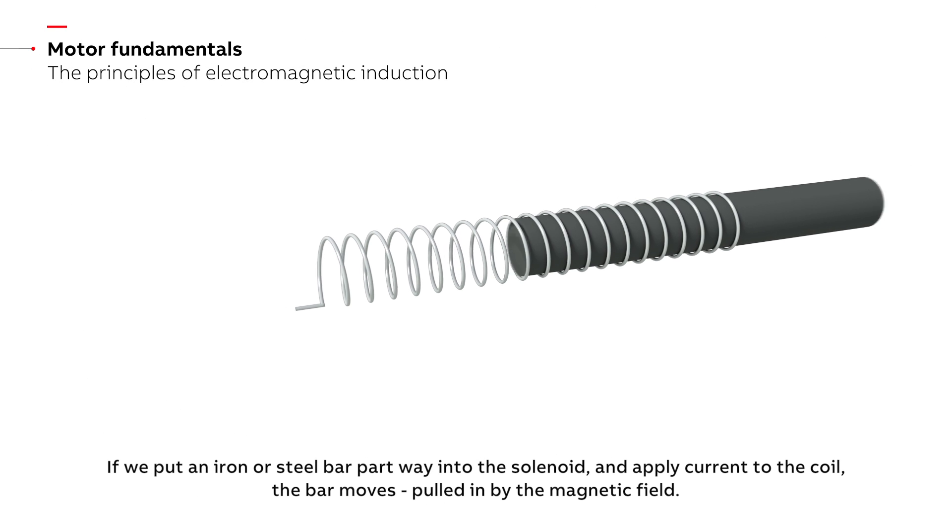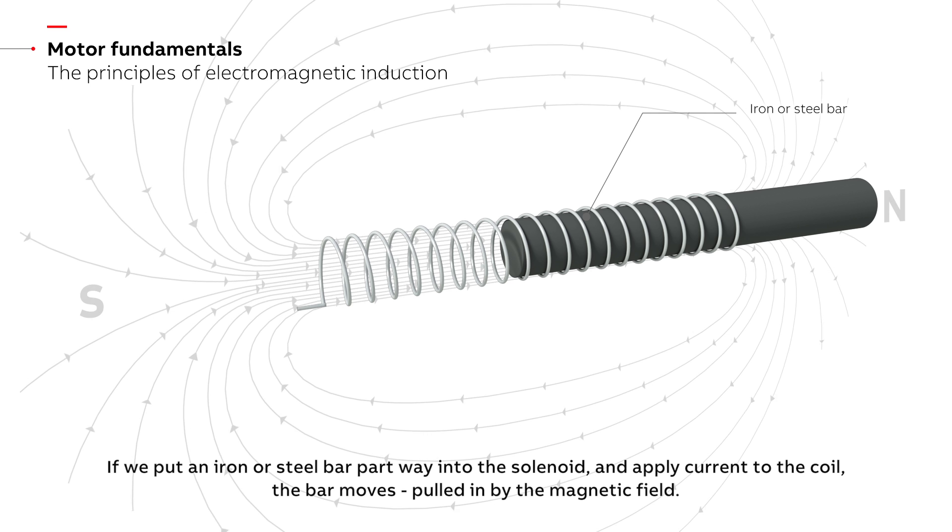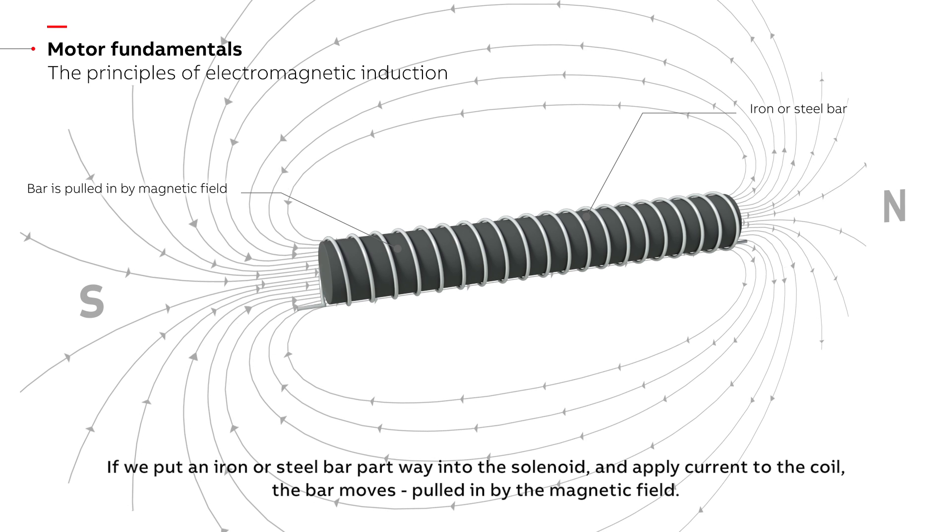If we put an iron or steel bar part way into the solenoid and apply current to the coil, the bar moves, pulled in by the magnetic field.